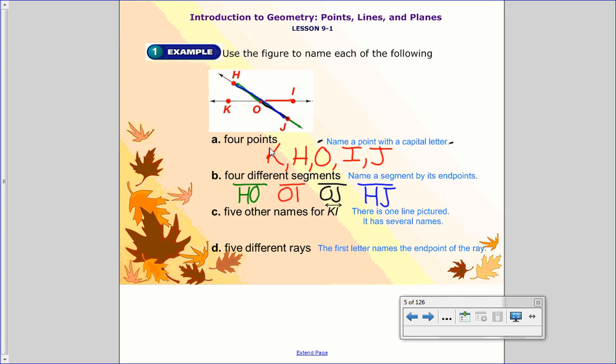Now, C says five other names for the line KI. So this is the line we're looking at, and you have to come up with five names for that line. So one you could do is IK. That one is just listing it backwards. And remember line, it's just different parts of it. So I could do line KO. I could do line IO. I could do OI. And I could do line OK. And again, you could put little arrows at the end. That way we know it is a line instead of a line segment.